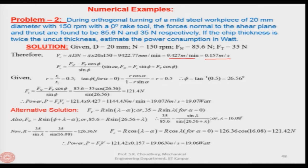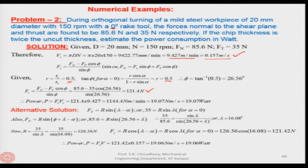For a 0-degree rake angle, tan(phi) equals r = 0.5, so phi = tan⁻¹(0.5) = 26.56 degrees. Then Fc can be found since Fn = Fc·sin(phi) + Ft·cos(phi) — we derived that. With Fn = 85.6 N and Ft = 35 N given and phi found, Fc is calculated. Power equals Fc times Vc, giving the result in Newton-meters per second, which is watts.